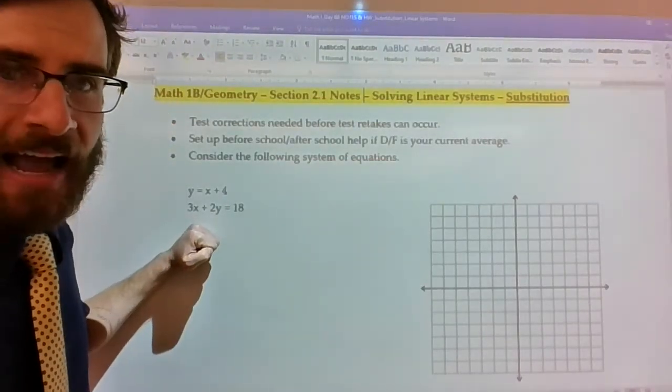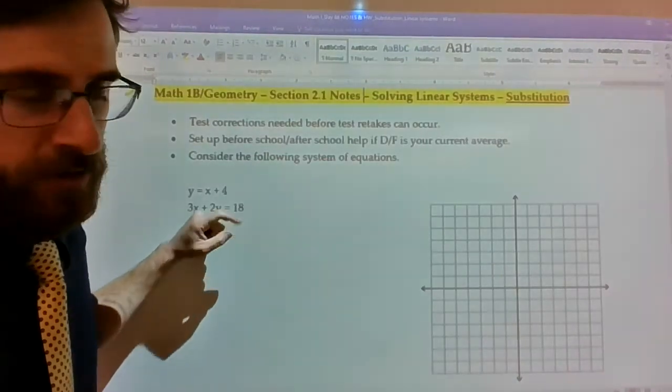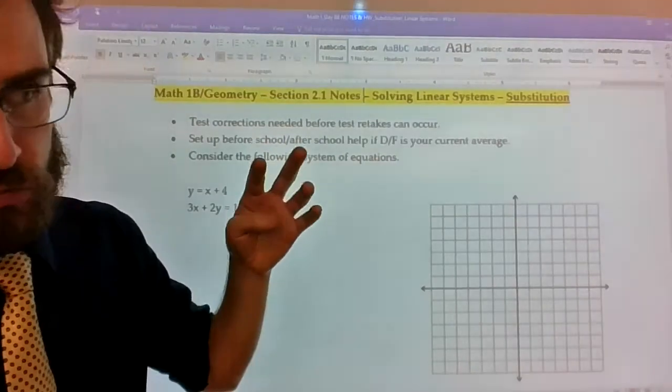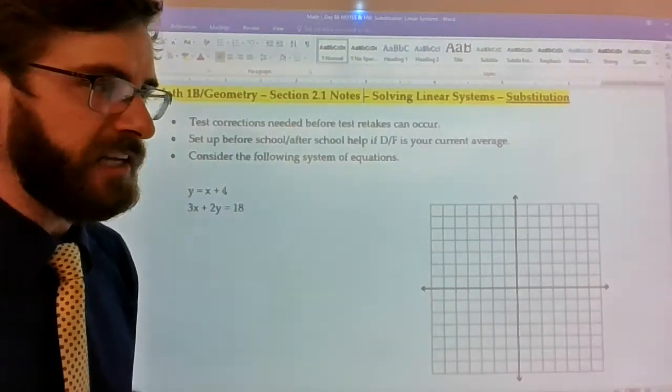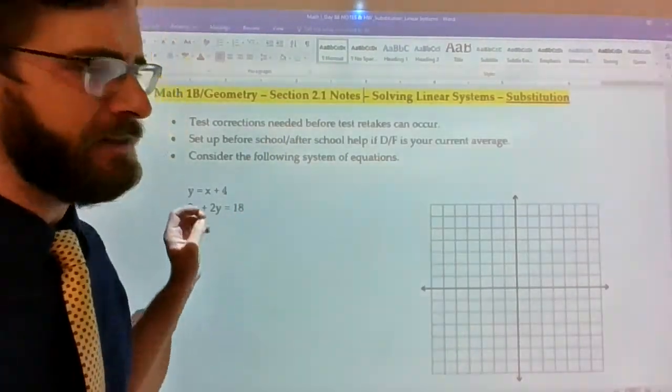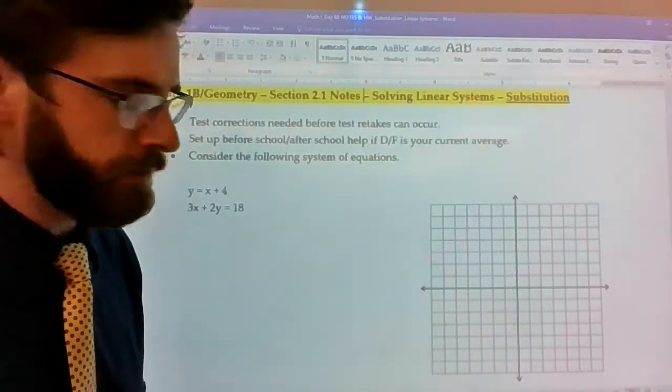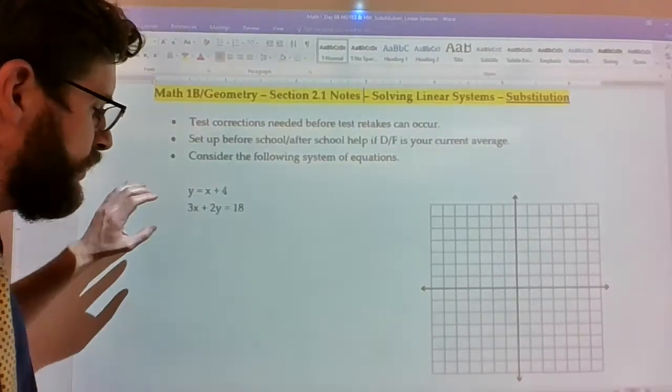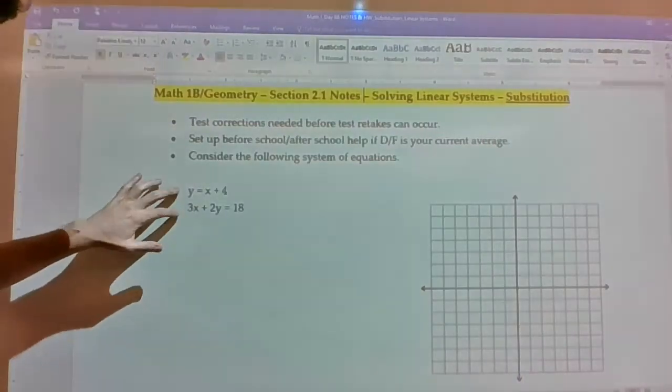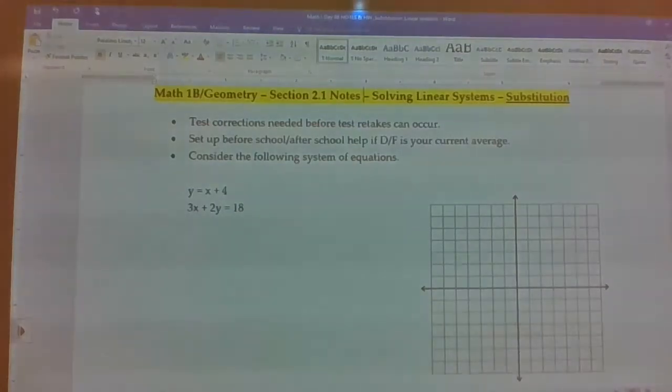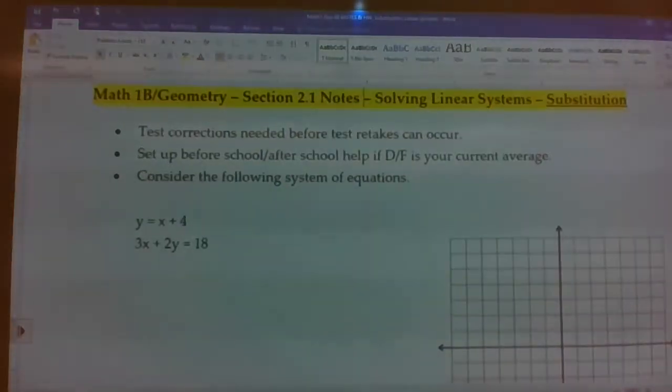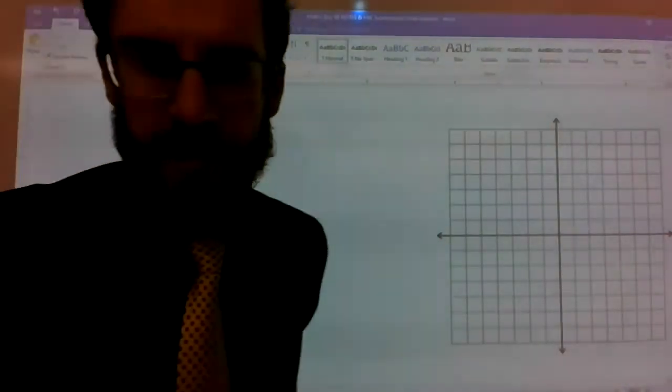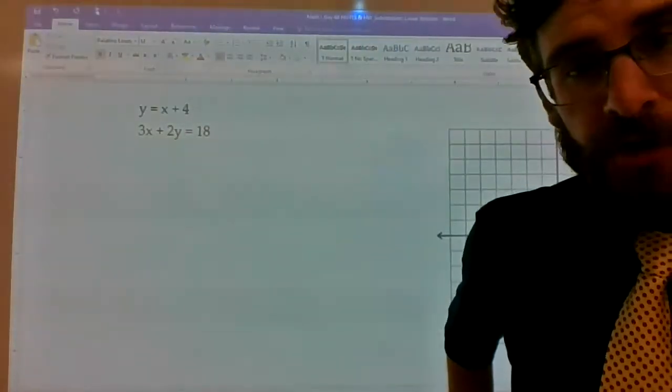So last chapter was all about how to deal with linear equations, either graphing one of them, two of them, graphing an inequality of one, graphing a system of inequality, special cases left and right, writing the linear equations, we covered a lot of ground. What I just want to do is ask you guys to consider what you would do if somebody said, let's graph y equals x plus 4 and 3x plus 2y equals 18.